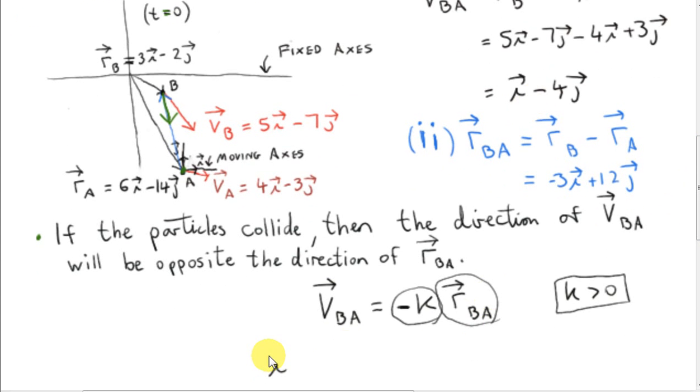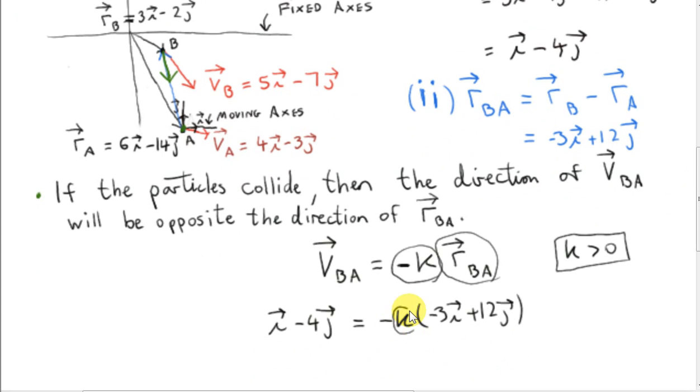Well, vector VBA is i minus 4j. And let's see if it's equal to minus K times vector RBA. In other words, can we find a positive number K for which this is true? Well this is quite easy to check actually. Multiplying minus K in here, we get plus 3Ki minus 12Kj.